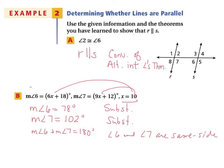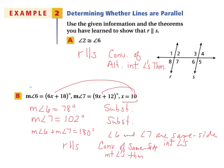Angle 6 and angle 7 are same side interior angles. Because they are supplementary same side interior angles, we can say that the two lines are parallel because of the converse of the same side interior angles theorem.